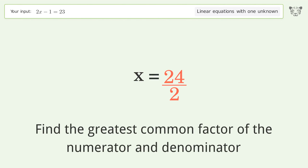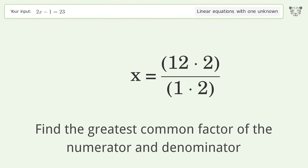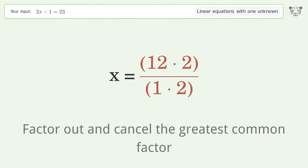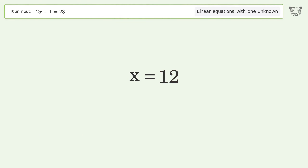Find the greatest common factor of the numerator and denominator. Factor out and cancel the greatest common factor. And so the final result is x equals 12.